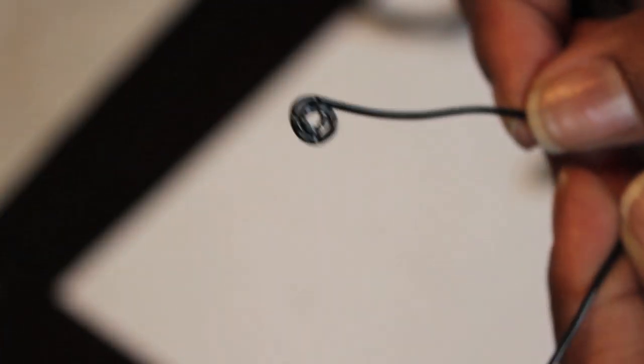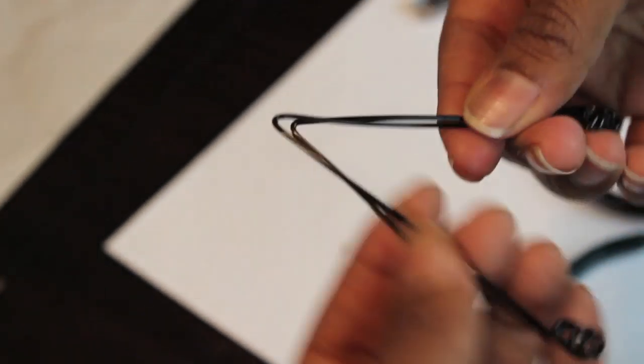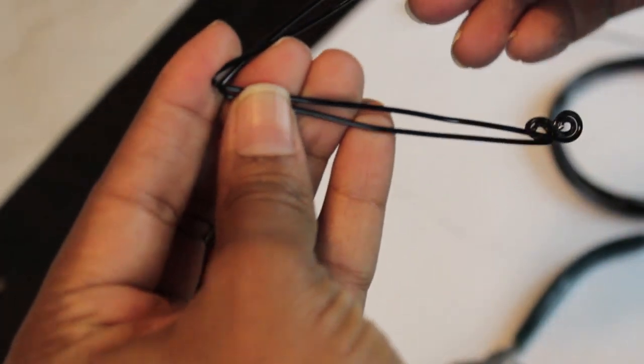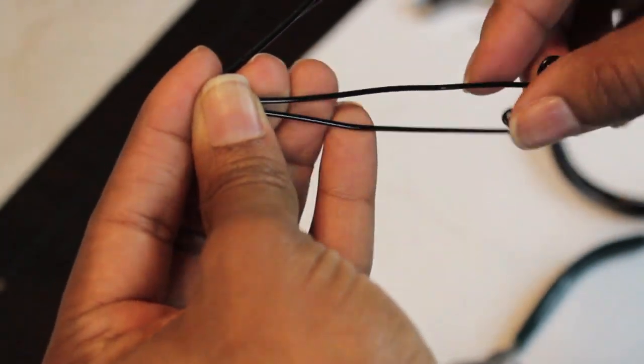Now once you get the second ear done, you're going to want to gauge it with the first ear. Make sure everything matches up—length, width, etc.—and work out all the kinks that you might have created when you were making the twist.